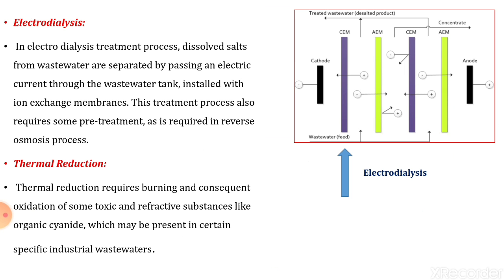In the electro dialysis treatment process, dissolved salts from wastewater are separated by passing an electric current through the wastewater tank installed with ion exchange membranes. This treatment also requires some pretreatment as required in the reverse osmosis process. The wastewater or influent is fed from the bottom, coming into contact with the anode and cathode electrodes, which are charged. Undesirable pollutants, cations and anions, get attracted towards the electrodes causing their removal and separation. The treated wastewater is taken out from the top, and the concentrates accumulated in chambers, called brine, are also removed.